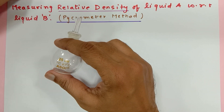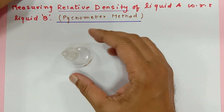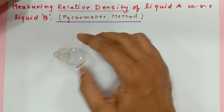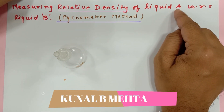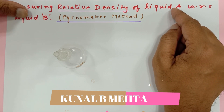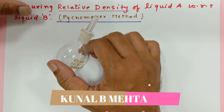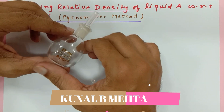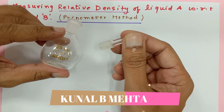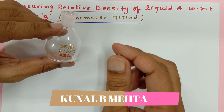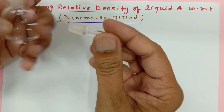Hello, scientific brilliant people! Today I am going to discuss a very important theory: how to measure the relative density of any liquid A with respect to another liquid B. The method I am using is the pycnometer method. This is our pycnometer bottle — it's a very small bottle with a capacity of 25 ml and it is made up of glass.